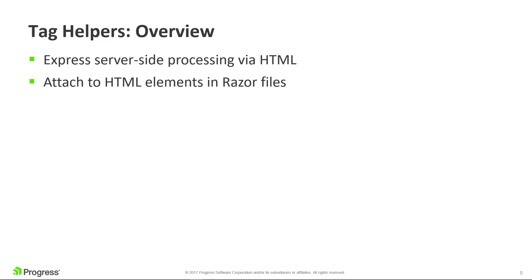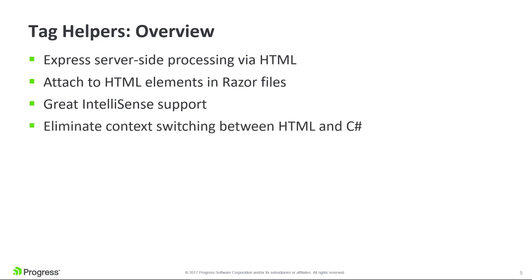Tag helpers can attach to existing HTML elements—for example the input element—to extend its feature set. Support for IntelliSense is far superior to that of HTML helpers. A tag helper is implemented as a C# class. You assign an HTML element name used to invoke that C# class, and each public property within that class can become an HTML attribute. And finally, that context switching problem has completely disappeared. The HTML helper's C# and Razor syntax has been replaced with HTML syntax.